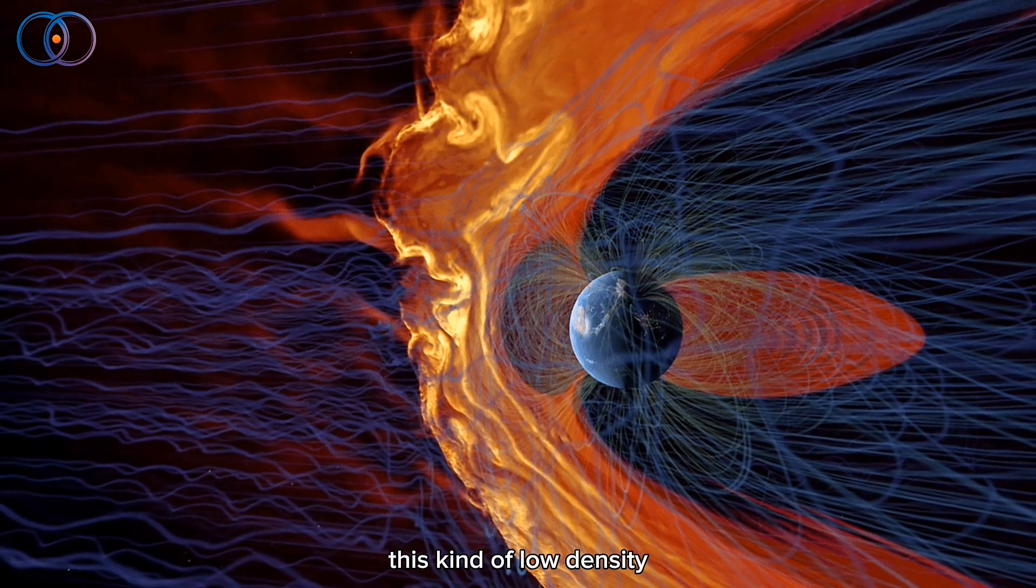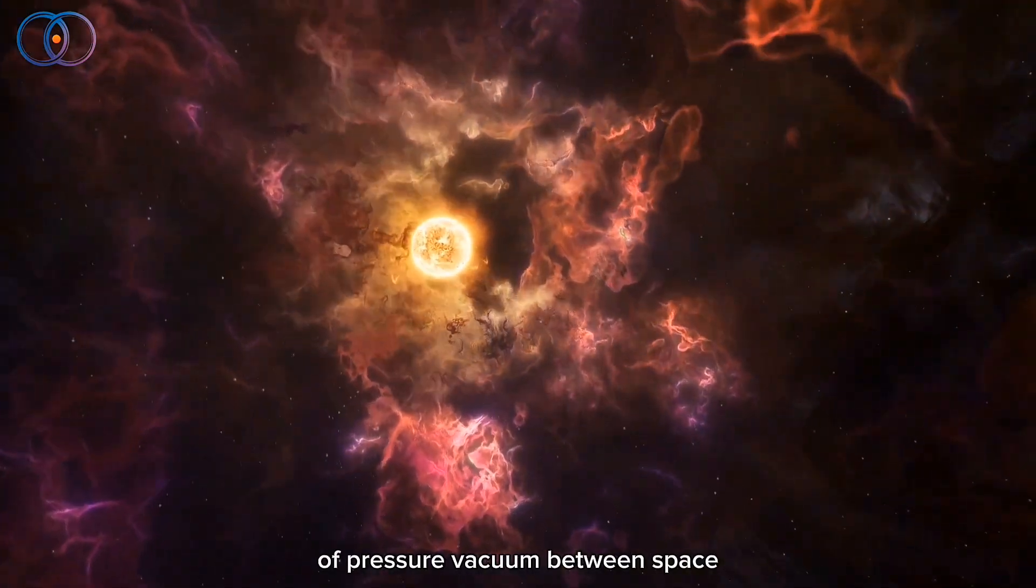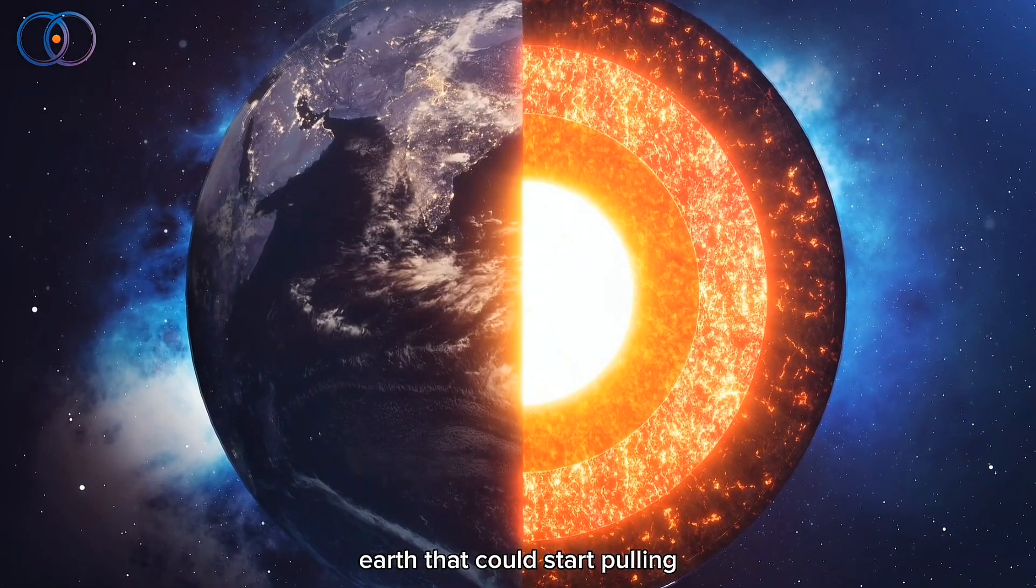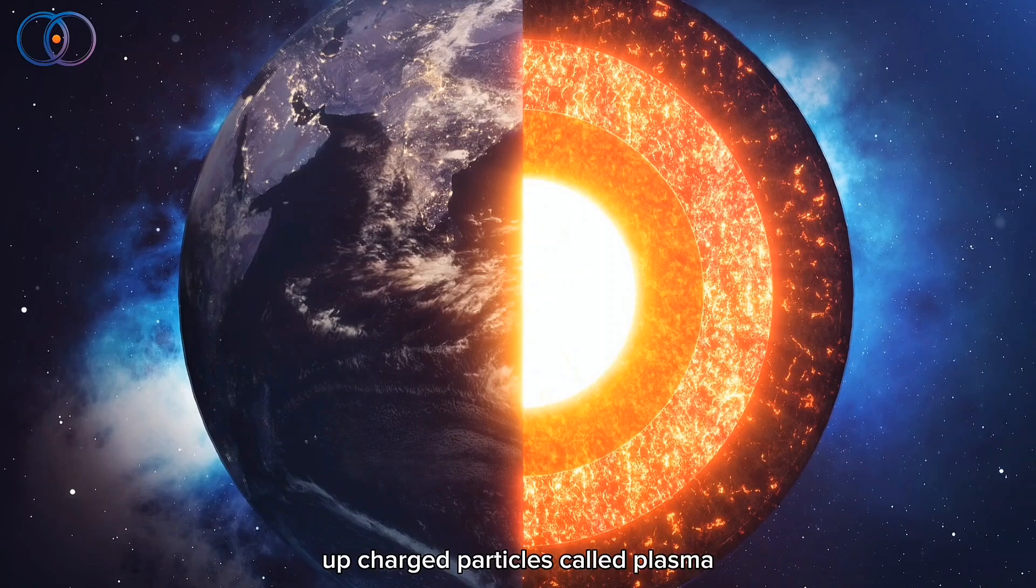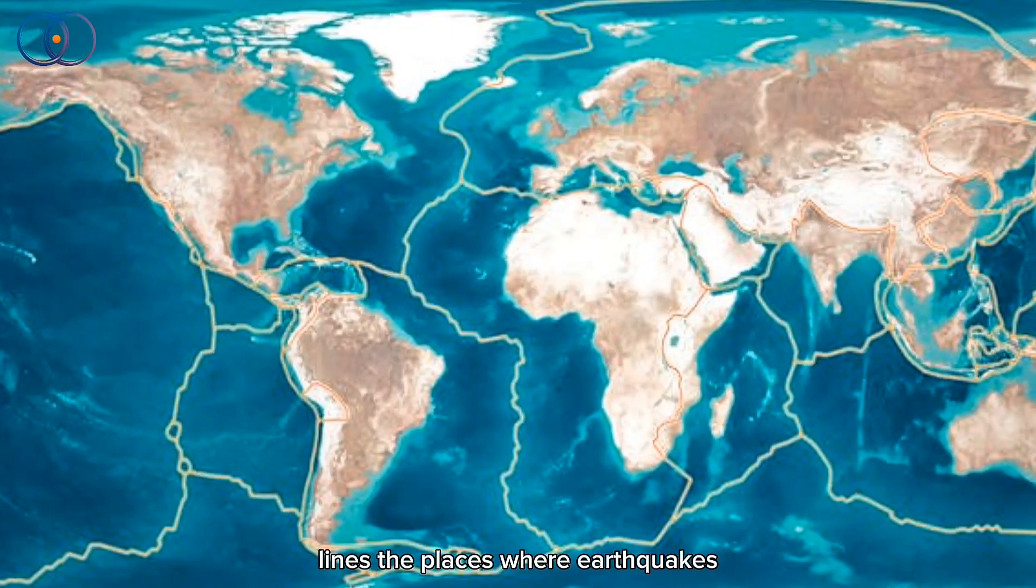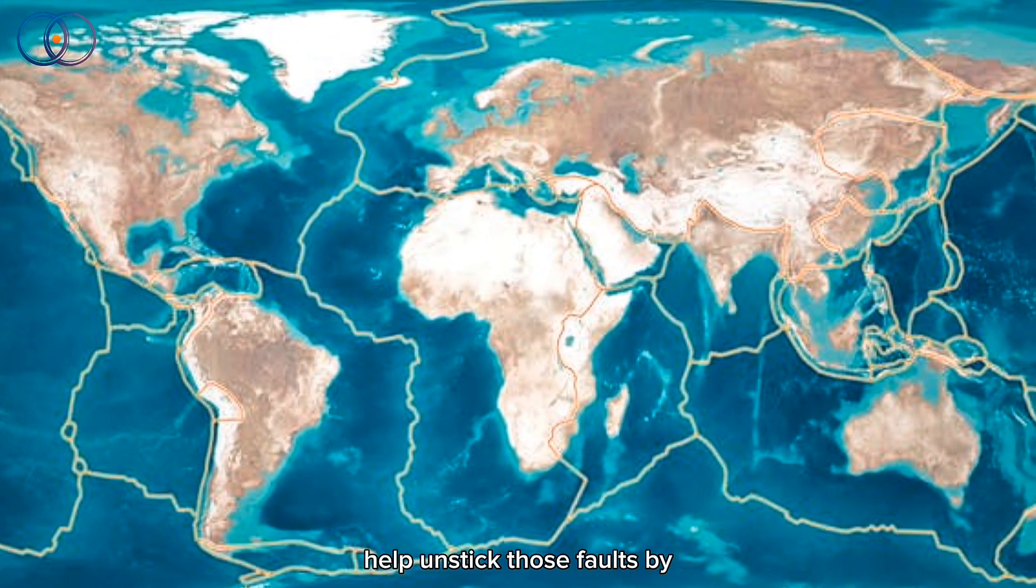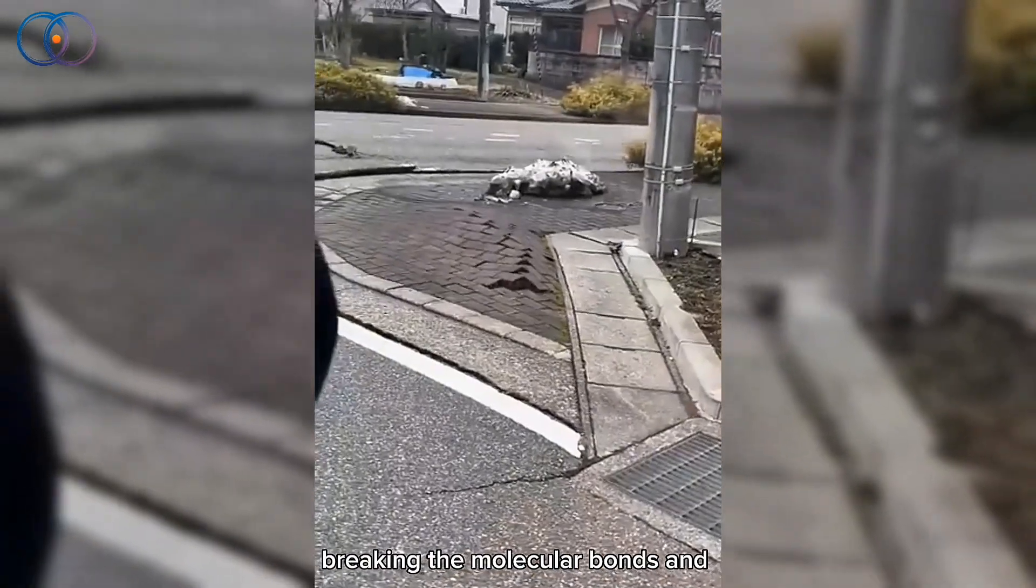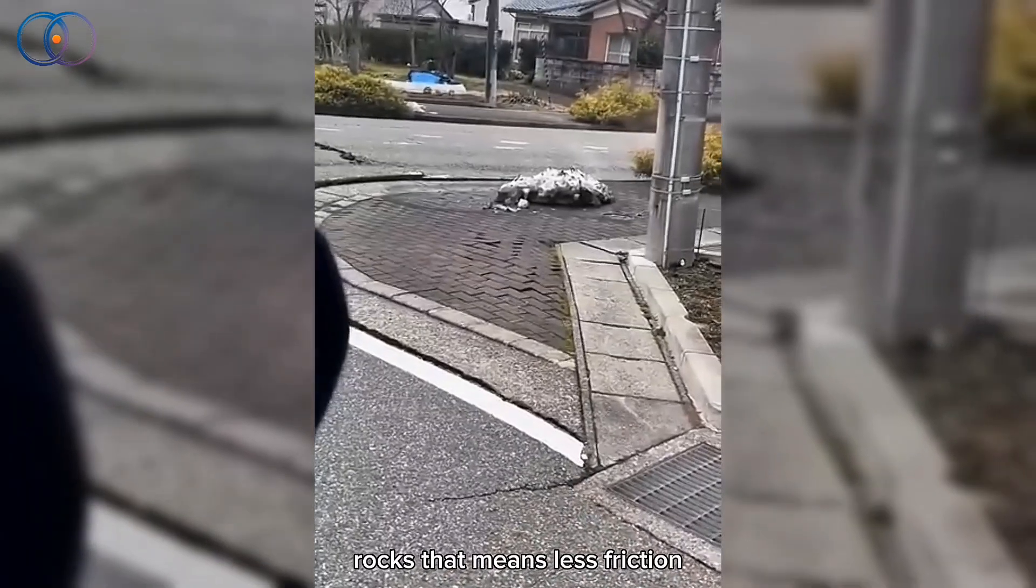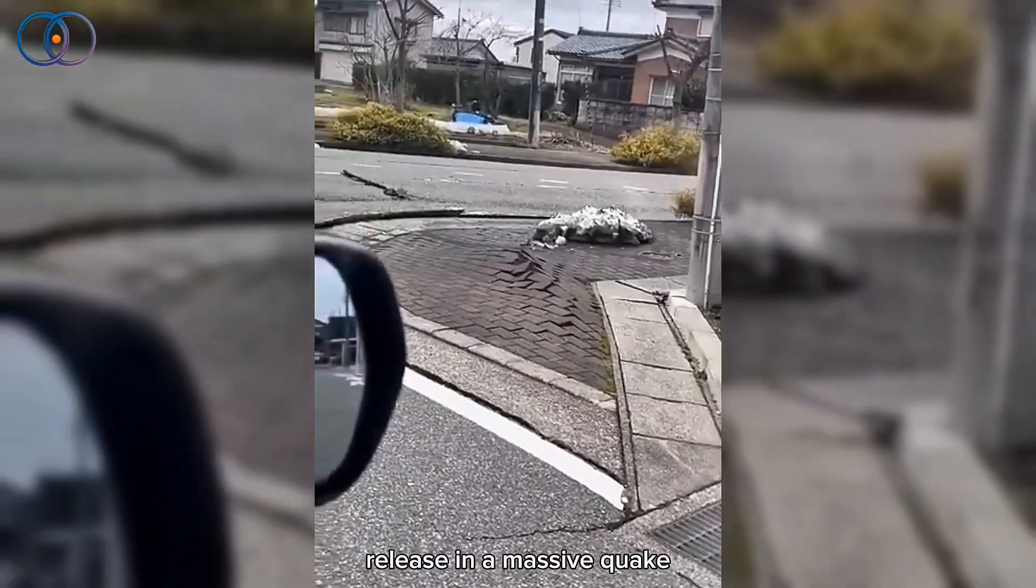There's a theory that this kind of low-density solar wind creates a kind of pressure vacuum between space and the inside of the Earth. That could start pulling up charged particles, called plasma, from deep underground. And if that plasma moves across fault lines, the places where earthquakes usually start, it might actually help unstick those faults by breaking the molecular bonds in rocks. That means less friction, and the pressure that's been building for years can suddenly release in a massive quake.